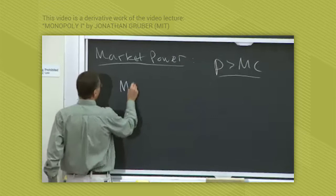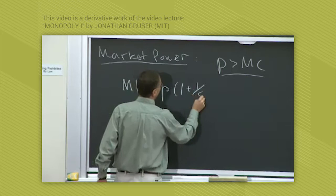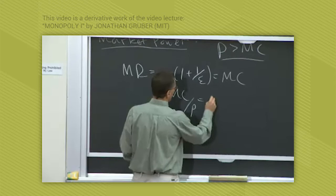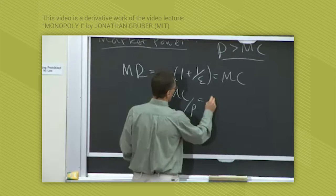Now to think about this, remember the condition for profit maximization. It was that marginal revenue, which we wrote as p times 1 plus 1 over epsilon equals marginal cost. So we can rewrite this as marginal cost over price equals 1 plus 1 over epsilon.